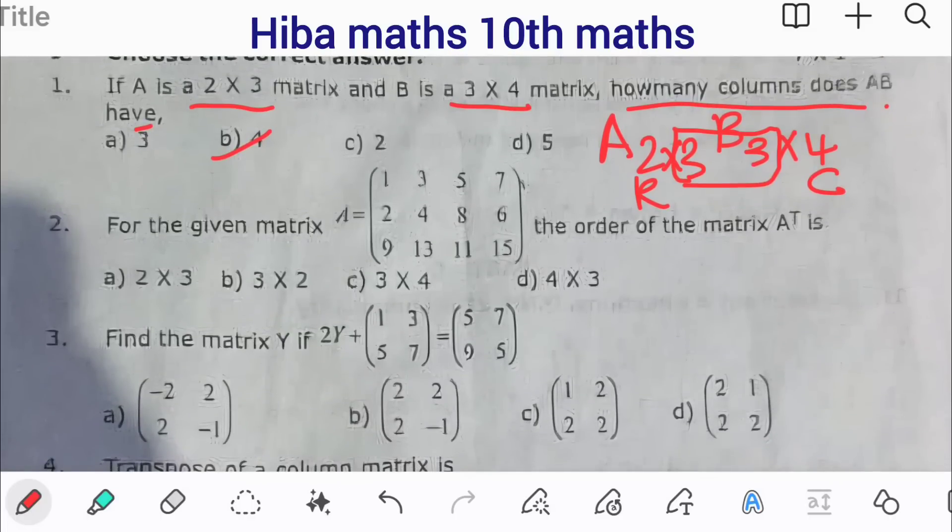For the given matrix A, what is the order of the matrix A transpose? The order of A is 3 rows, 4 columns, which is 3 into 4. Then the transpose is 4 into 3. The answer is D.